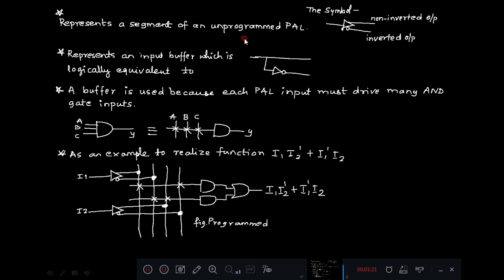This represents a segment of an unprogrammed PAL. The symbol shows a non-inverted triangular shape and a bubble here, so output you are taking non-inverted output and through the bubble you are taking inverted output. This represents an input buffer which is logically equivalent to a direct line, a non-inverted output and one inverter.